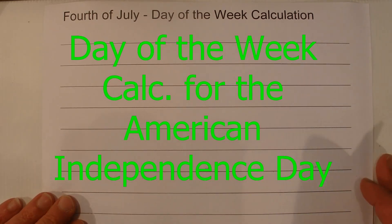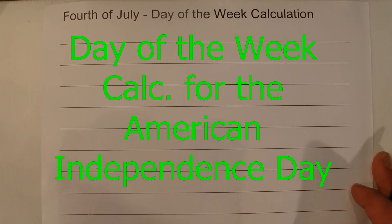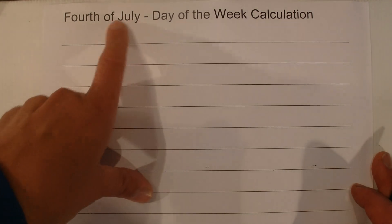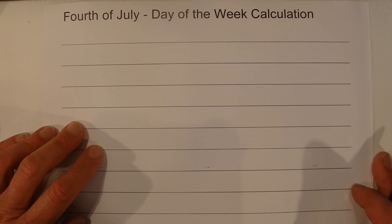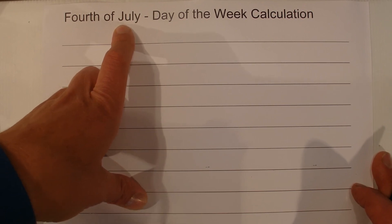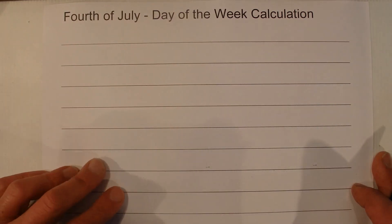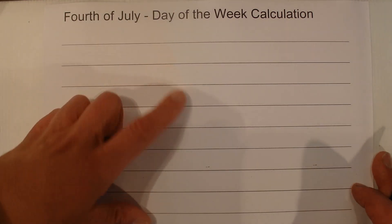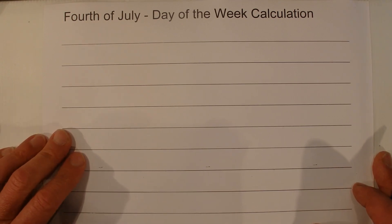Hi there. Today I'm going to show you a simple formula, a simple calculation to work out what day of the week the 4th of July falls on for any year. Obviously the 4th of July is American Independence Day and it's always on the 4th of July, but the day of the week can vary from Sunday, Monday, Tuesday right through to Friday and Saturday — it could fall on any of the seven days of the week.